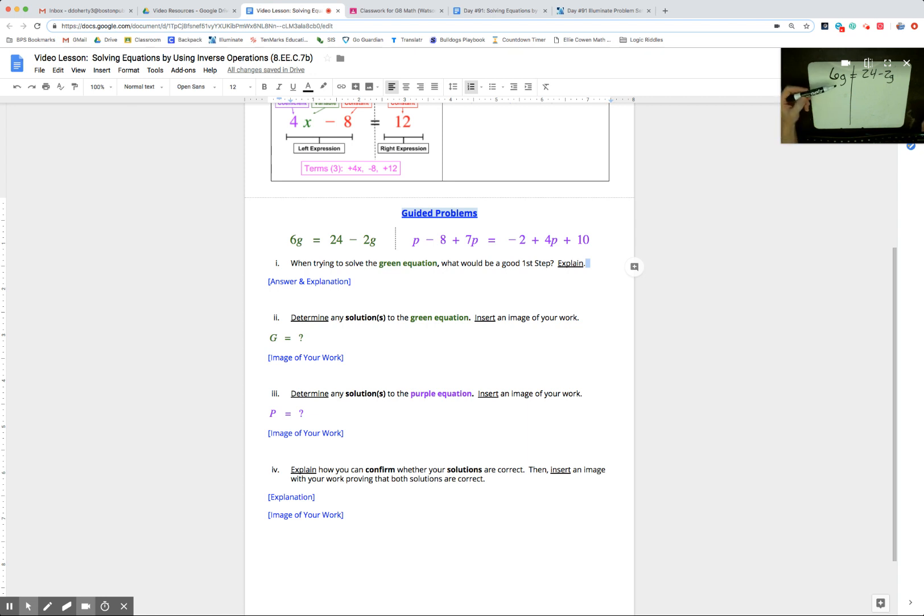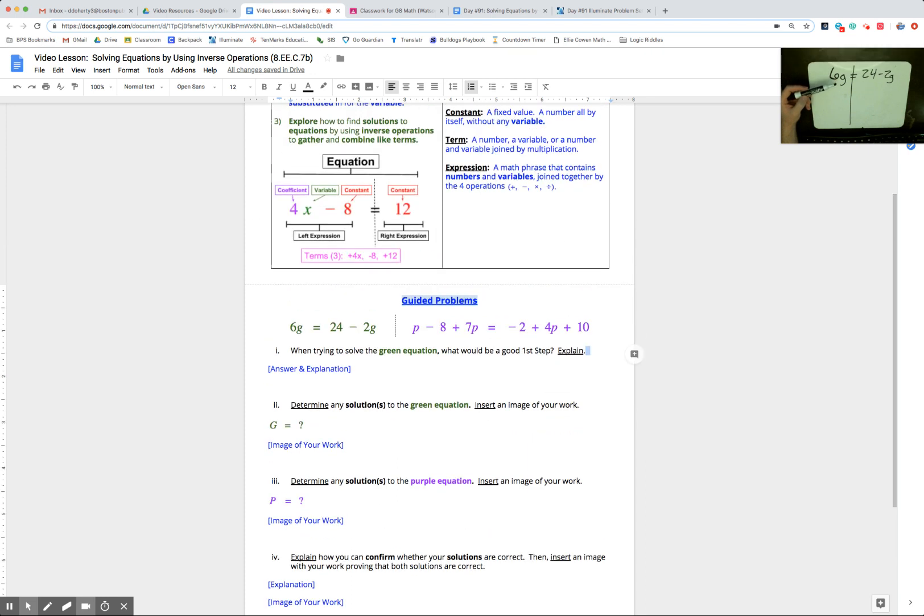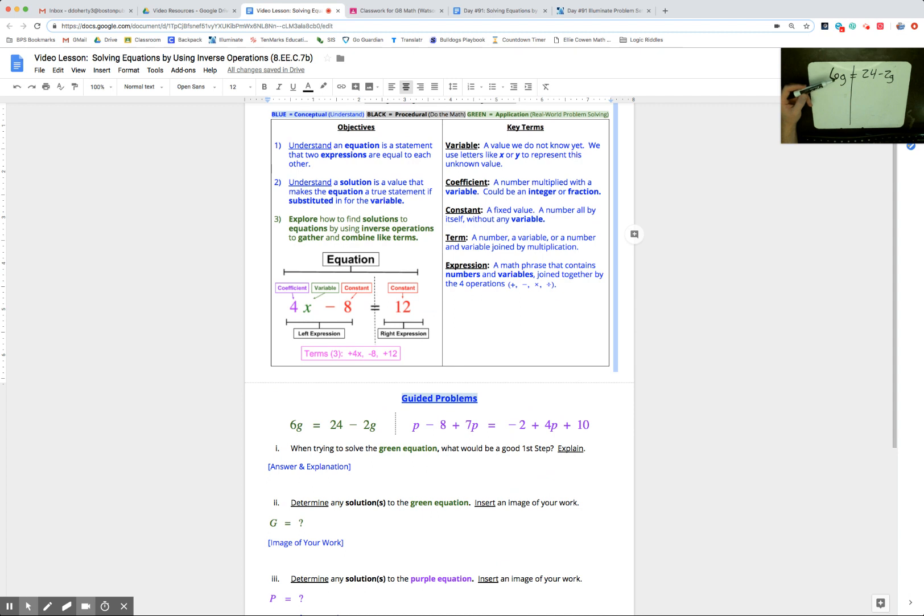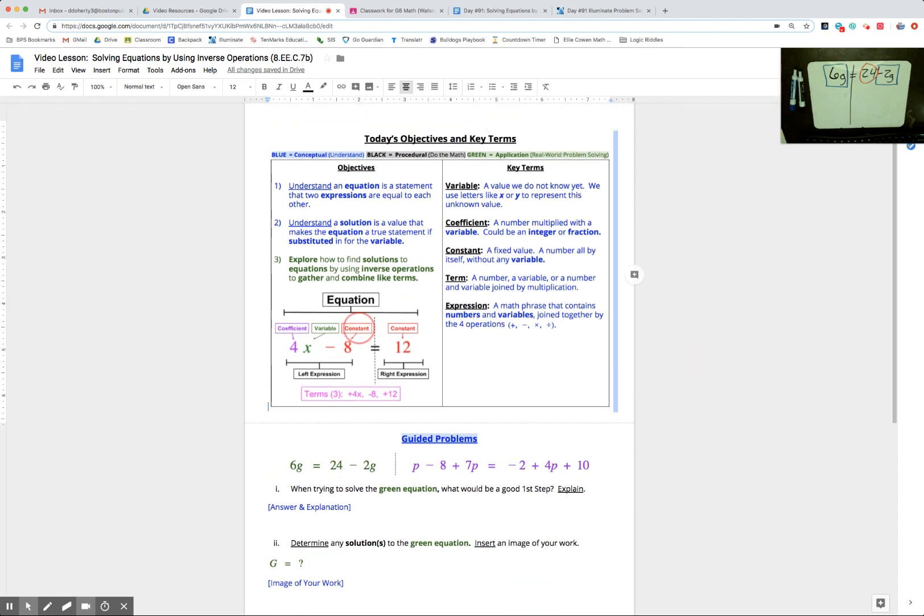You're going to be asked how many terms there are a bunch today. A term is every time we have a number, a variable, or a number and a variable joined together. So up here in our example today, we had three terms: 4x minus 8 equals 12. That's an equation you were used to working with. Our first example today also has three terms: 6g, 24, and negative 2g. And I want to point out what's a little different today. Now we have two variable terms and one constant this time, which is a little different than the equations you were used to last year.